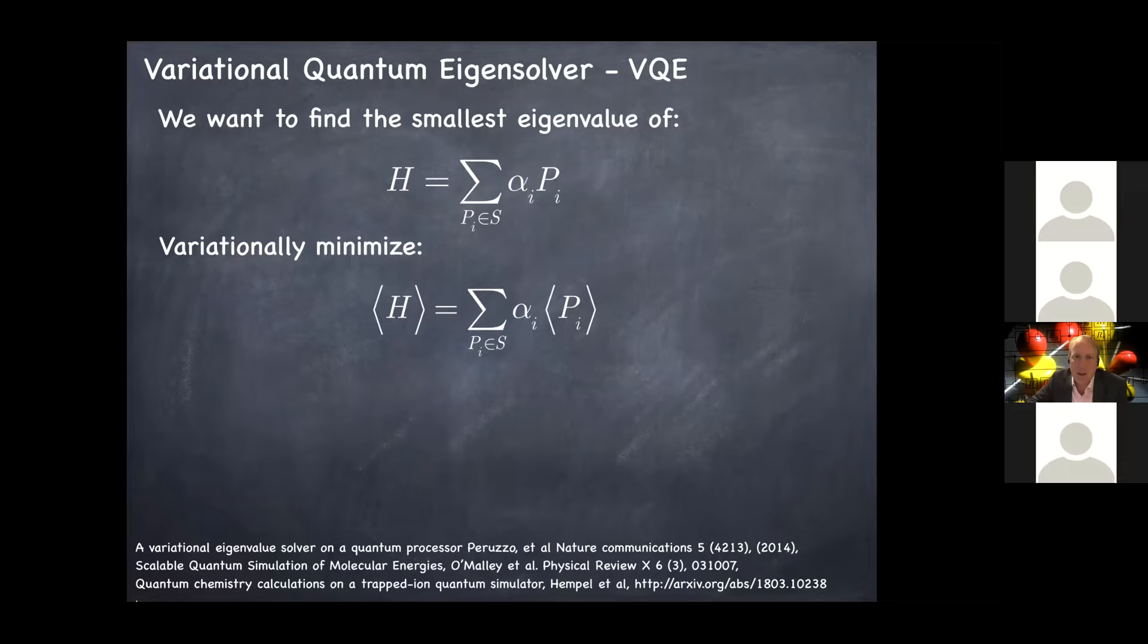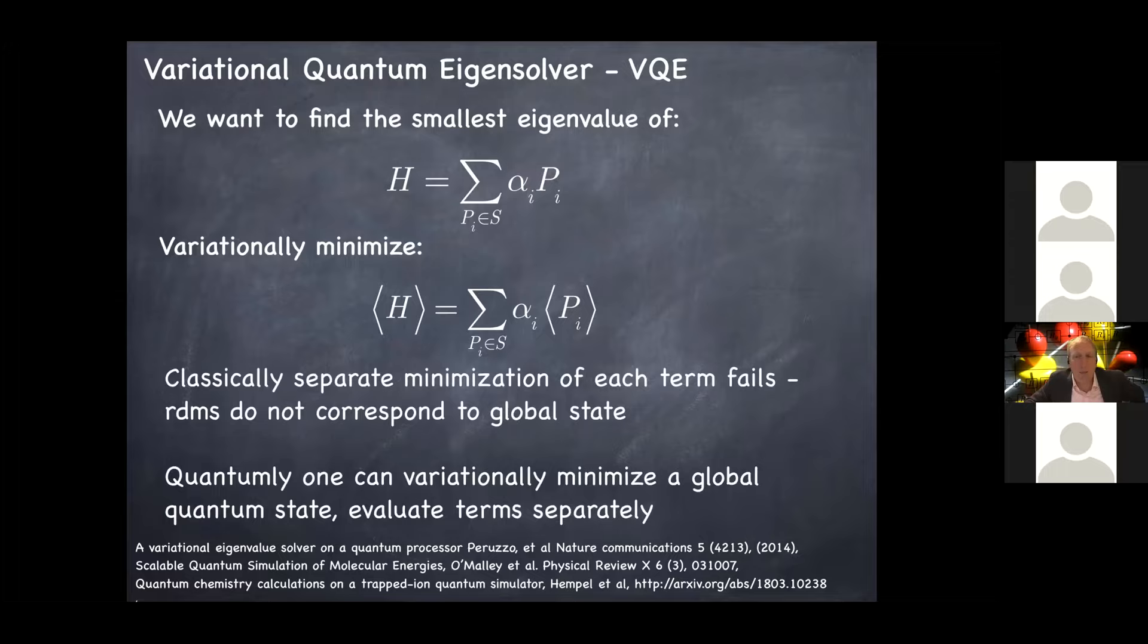And then all we do is we variationally minimize the expectation of this Hamiltonian by estimating the terms separately. And then we minimize this sum. Now, because I know there are probably a bunch of quantum chemists on the call, it's worth reminding ourselves what would the classical analog of this be? Well, the classical analog of this method really would be an RDM approach where you separately minimize each of the reduced density matrices that's in the support of these Pauli operators. And something that's extremely well known in chemistry is that you have something called the representability problem, which is you're not allowed to just willy nilly optimize every reduced density matrix independently. You have to make them obey a hidden constraint, which is that they should arise from some global quantum state.